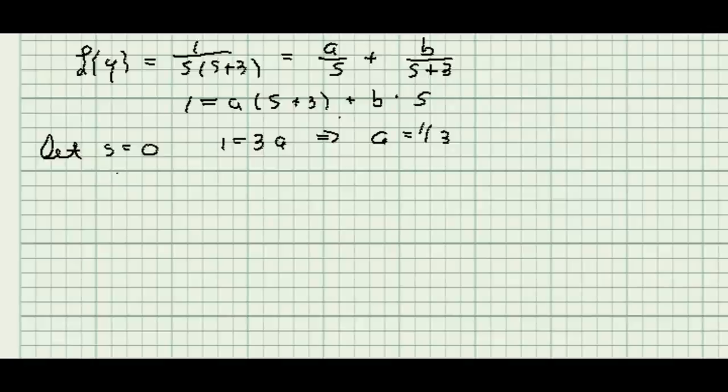My next clever choice for s is going to be equal to minus 3, which will allow me to isolate b. And I get that b is negative 1 third.